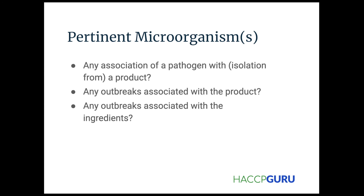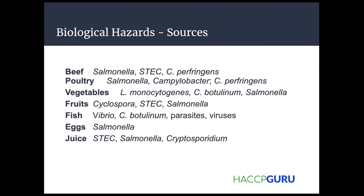That verification step is part of the HACCP plan. When the warehouse receiver gets the delivery, they need to check that the COA is present and know how to evaluate it — essentially a go/no-go decision. If it's a no-go, the product must be put on hold so the ingredient doesn't get pulled into production. That's a small example of what that process looks like in practice.